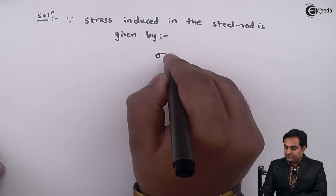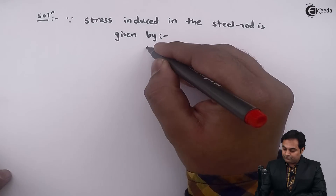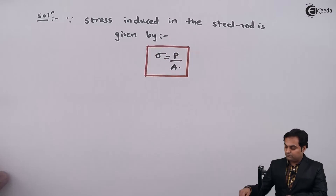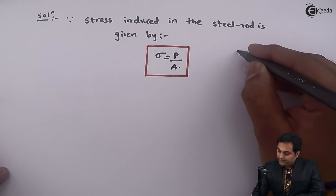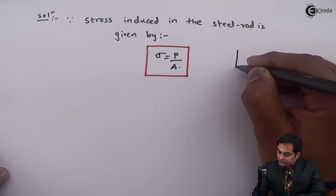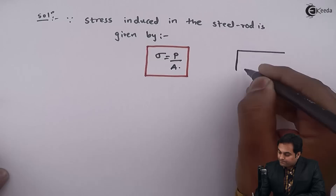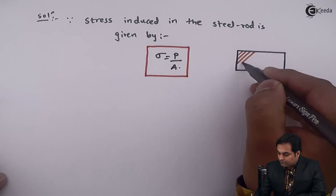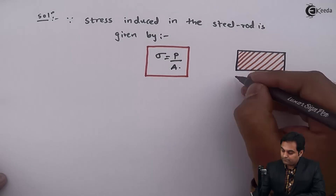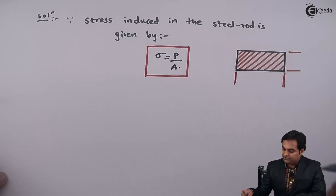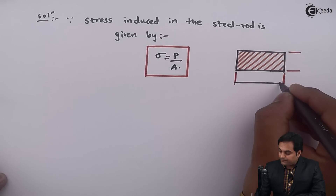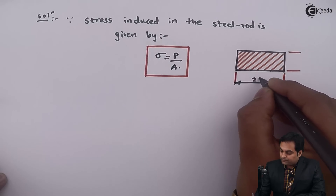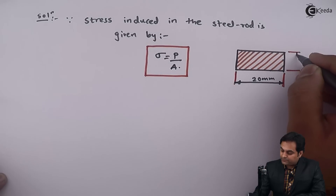The stress induced in the steel rod is given by: stress equals load divided by area. The area is given in the form of a rectangular cross-section. The width is 20 mm and the depth is 10 mm.